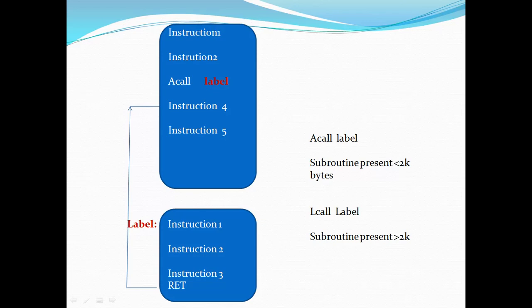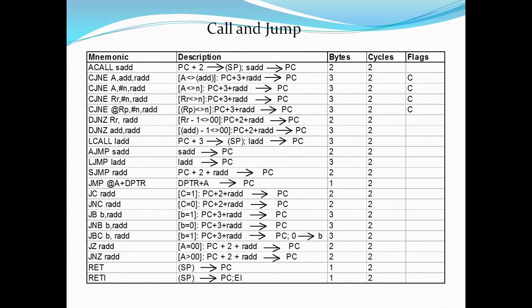How does the compiler return from a subroutine to the main program? It finds the last statement from your subroutine, RET. With the help of RET, it leaves the subroutine and returns to the main program after the call instruction, continuing execution from there. This is the use of the call instruction from assembly language. The call instruction helps to execute subroutines, and a subroutine contains the repeated lines of your application program.